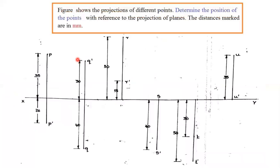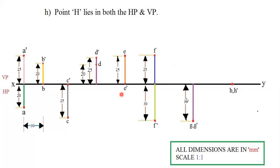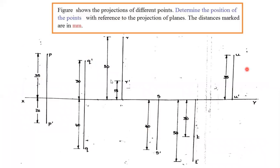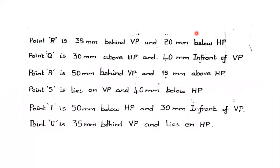The second question type is when they give you the diagram itself and ask you to write the wordings. The question reads: 'Figure shows the projection of different points — determine the position of points P, Q, R,' and so on, with distances marked in mm. Also remember to write 'All dimensions are in mm' and 'Scale 1:1' on your A3 sheet, with the heading 'Projection of Points'. The height of the text will be 5 mm. With the help of the shortcut, try to write the position description for all the points.